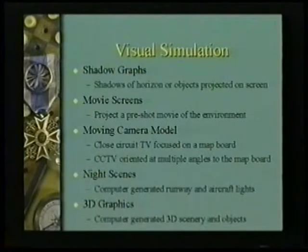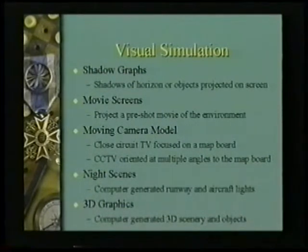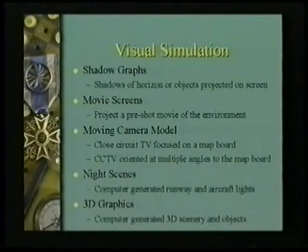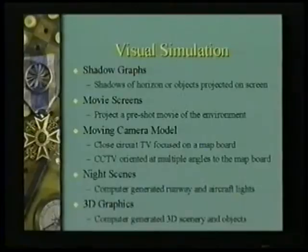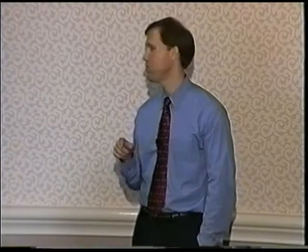Then there was the moving camera model. Imagine using closed-circuit television so that you don't have to shoot the movie up front and have it be static, but you can have the camera be controlled by the controls of the flight simulator. The camera actually shows you a scene based on where you fly the camera using closed-circuit television.